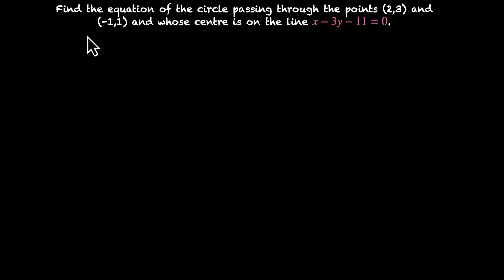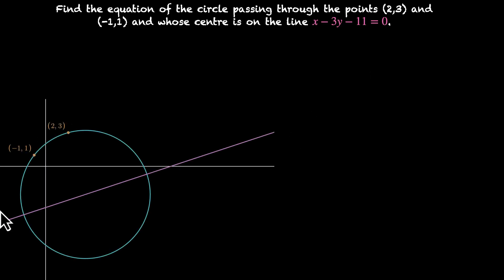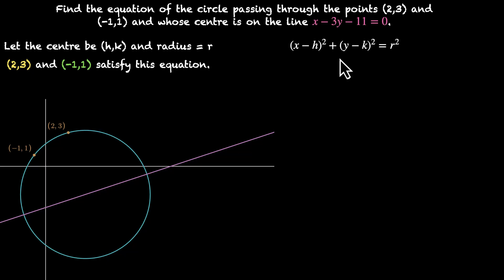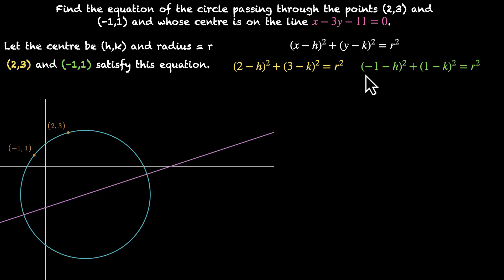Let's try another one. Find the equation of the circle passing through the points 2 comma 3 and minus 1 comma 1 and whose center is on the line x minus 3y minus 11 equals 0. Similar approach: the points 2 comma 3 and minus 1 comma 1 lie on the circle and the center lies on that line. Assuming center is h comma k and radius is r, the equation is x minus h squared plus y minus k squared equals r squared. Plugging in both points gives two equations each equal to r squared.